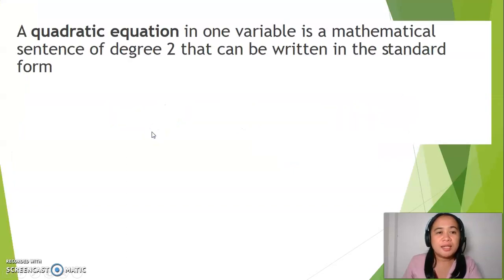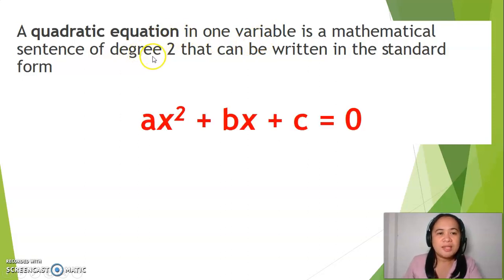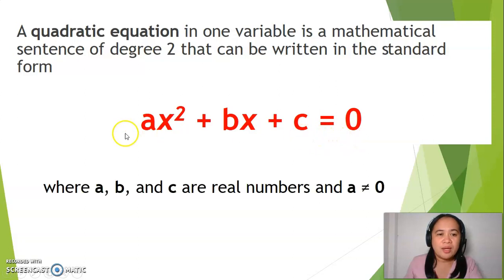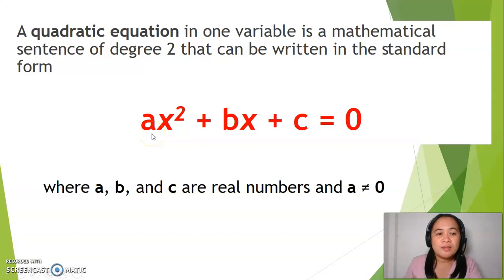A quadratic equation is an equation in one variable in which the highest exponent is 2, and it can be written in the standard form ax squared plus bx plus c equals 0, where a, b, and c are real numbers, and a should never be equal to 0.